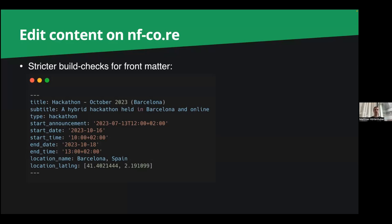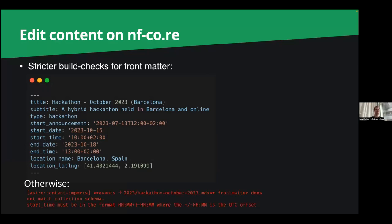One thing you might encounter is that we now have stricter build checks for the front matter. When you write markdown you might have seen that we have not just markdown in our files but also front matter, distinguished by three dashes, which we use to collect metadata about the file — usually title and subtitle. For events we also have a start date and start time. Because we had so many problems with dates, countdowns, and correct display, we now enforce a UTC offset on start time and end time. If you don't include it you get a build error, which hopefully has a helpful error message for you to know what went wrong.